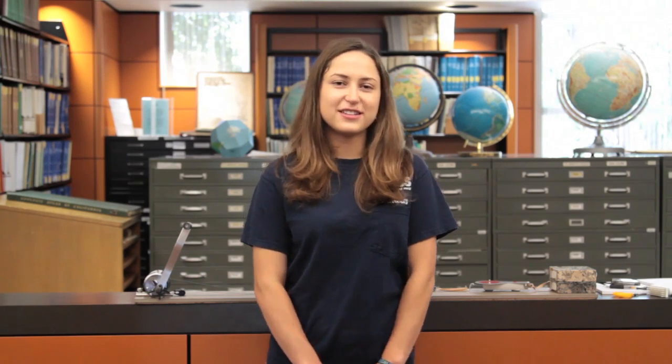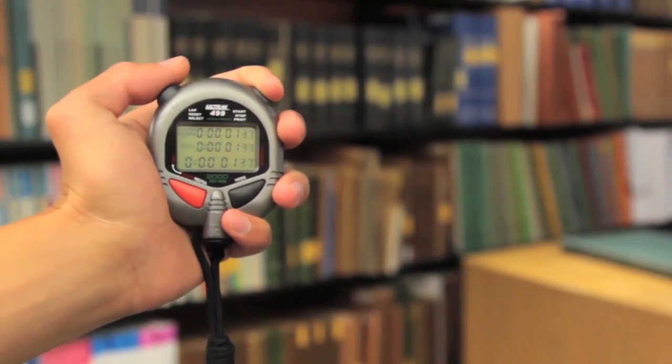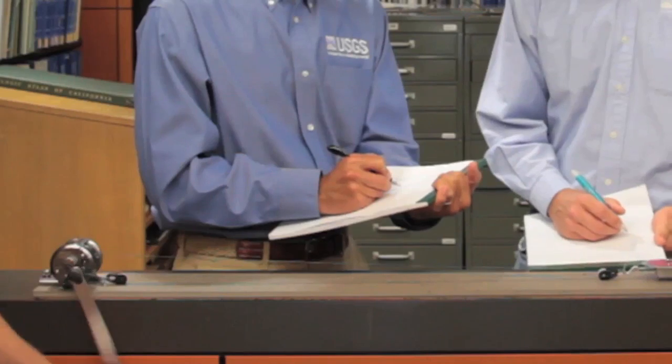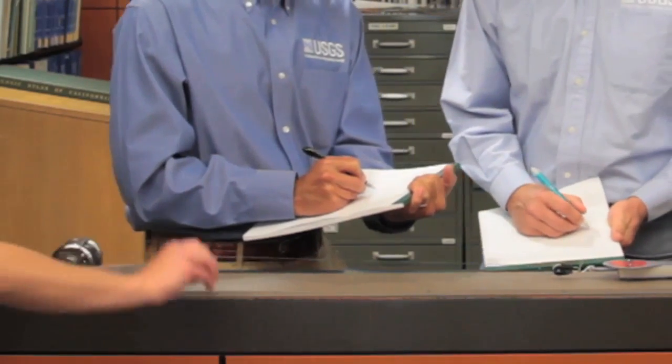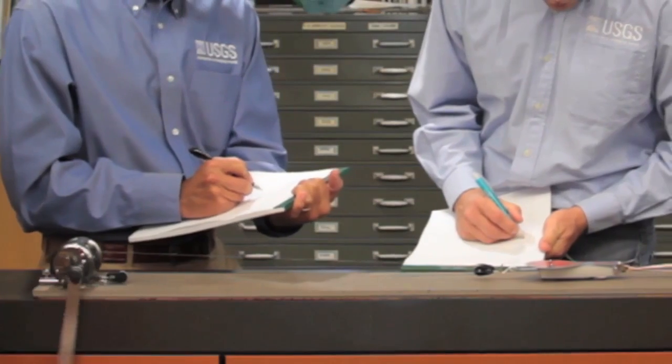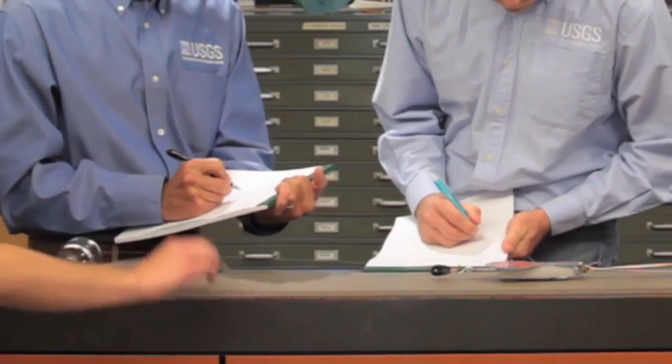Now we're moving on to experiment five, and we will be testing to see whether constant failure stress or constant minimum stress is a better predictor of earthquakes. We have help from three USGS employees, Ross, Vulcan, and Jake. Vulcan will be recording the time in seconds of each earthquake. Ross will be recording the force immediately before an earthquake occurs, and Jake will be recording the force immediately after an earthquake occurs.